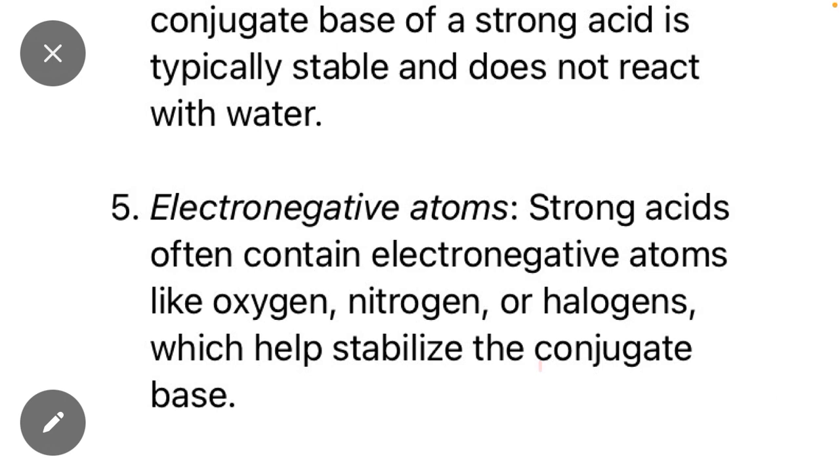Number five point: electronegative atoms. Every strong acid contains electronegative atoms, mostly oxygen, nitrogen, or halogens. For example, HCl contains halogen, HNO3 contains oxygen as well as nitrogen. These are strong acids.